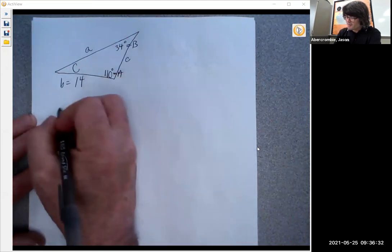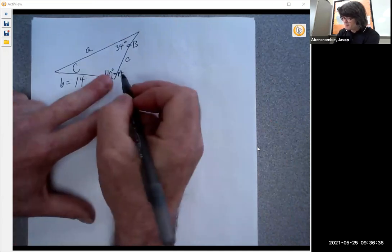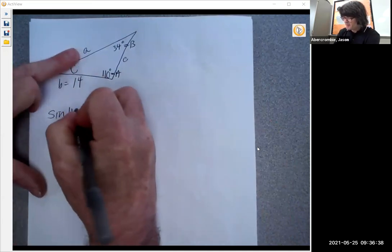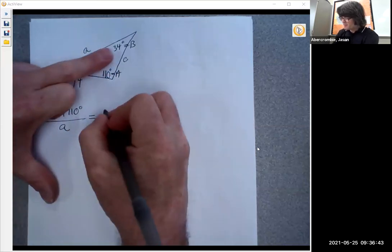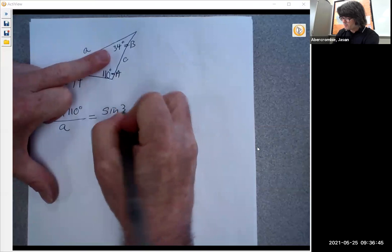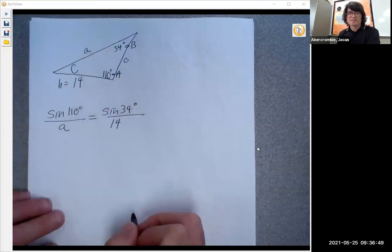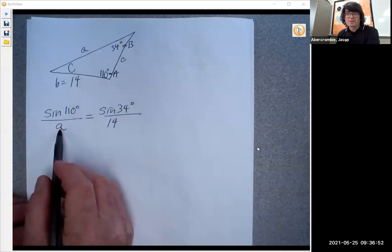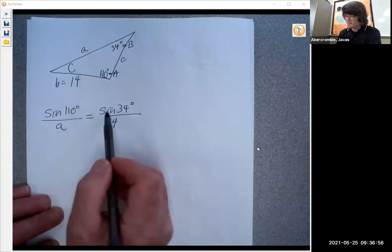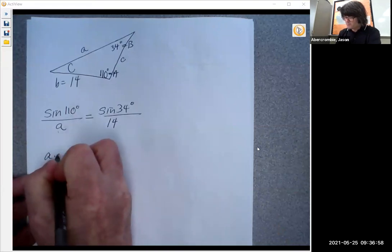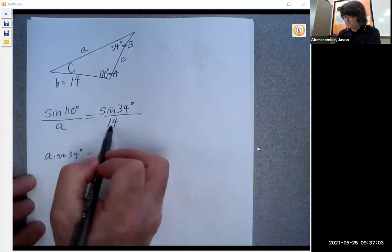So we'll start with sine of 110, sine of angle A over side a equals sine of B, which is 34, over side b. So we'll end up with something like this. Our goal is to solve for a. So I'm going to start out by cross-multiplying to make this happen. a times sine 34 equals sine 110 times 14.